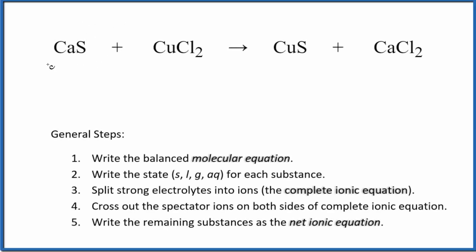Let's write the balanced net ionic equation for CaS plus CuCl2, calcium sulfide plus copper(II) chloride. First thing we need to do, balance the molecular equation. This is the molecular equation. It's already balanced, so that's kind of nice.